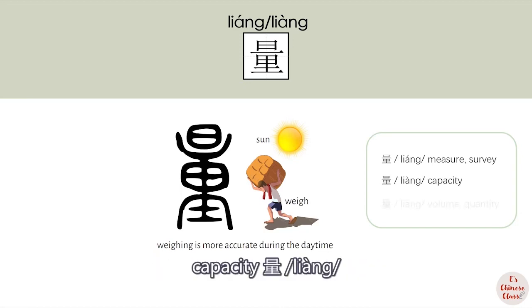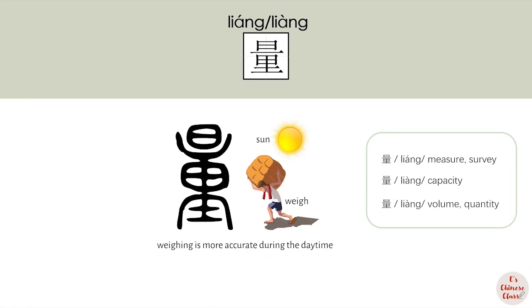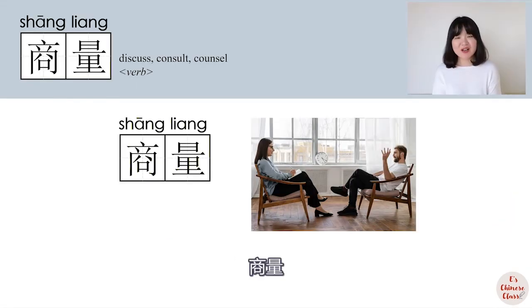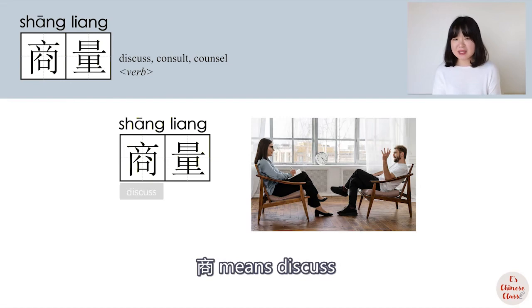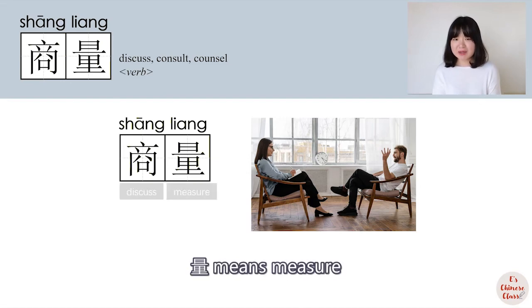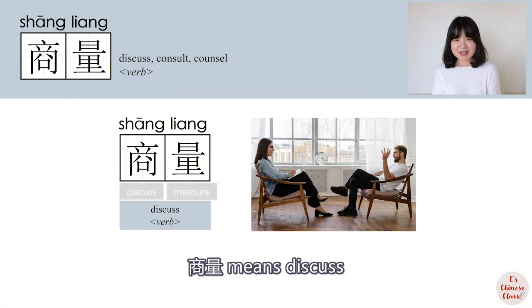The extended meanings of 量 are capacity and volume. So: 商 means 'discuss', 量 means 'measure', and together 商量 means 'discuss'.